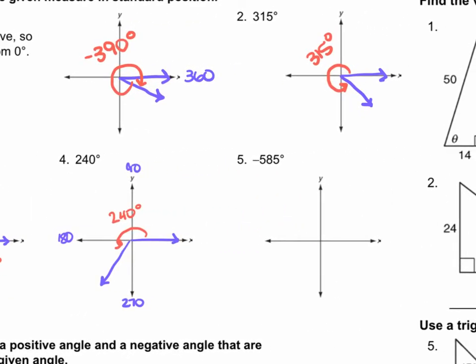For number 5, we have negative 585. We're going to start that initial side on our positive x-axis. We are going to go down and to the left — a negative rotation — all the way around is negative 360, then in this quadrant we'll have our negative 585. So we went down and around to the left, all the way around, then down and to the left again up to the second quadrant, giving us negative 585 degrees.